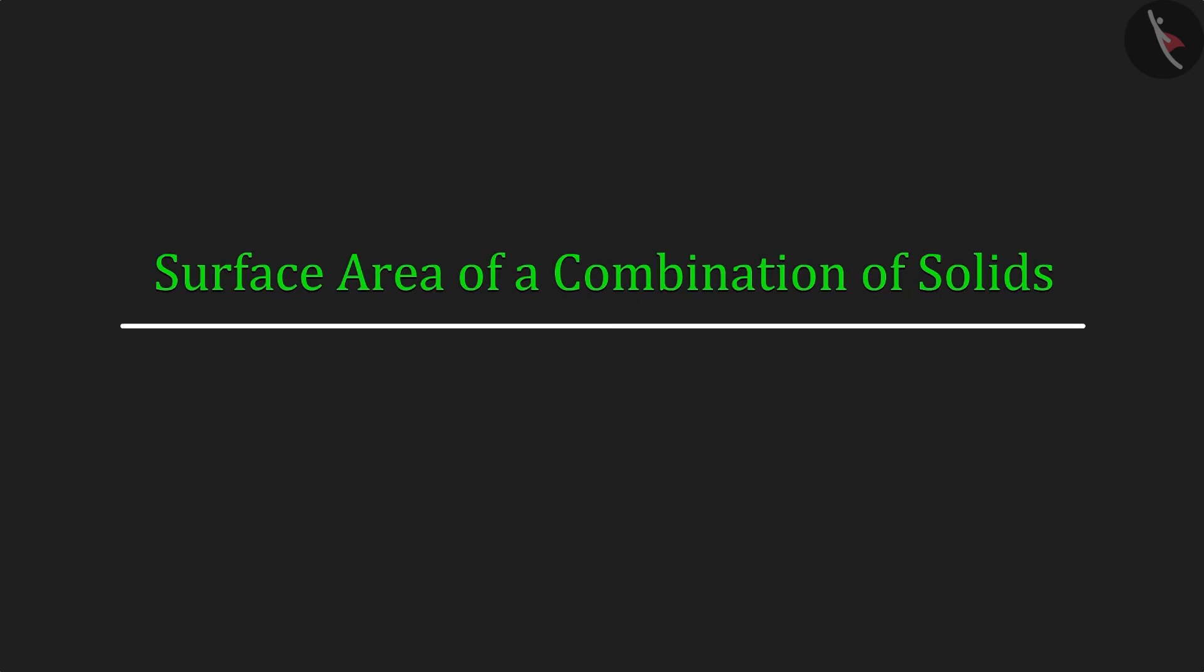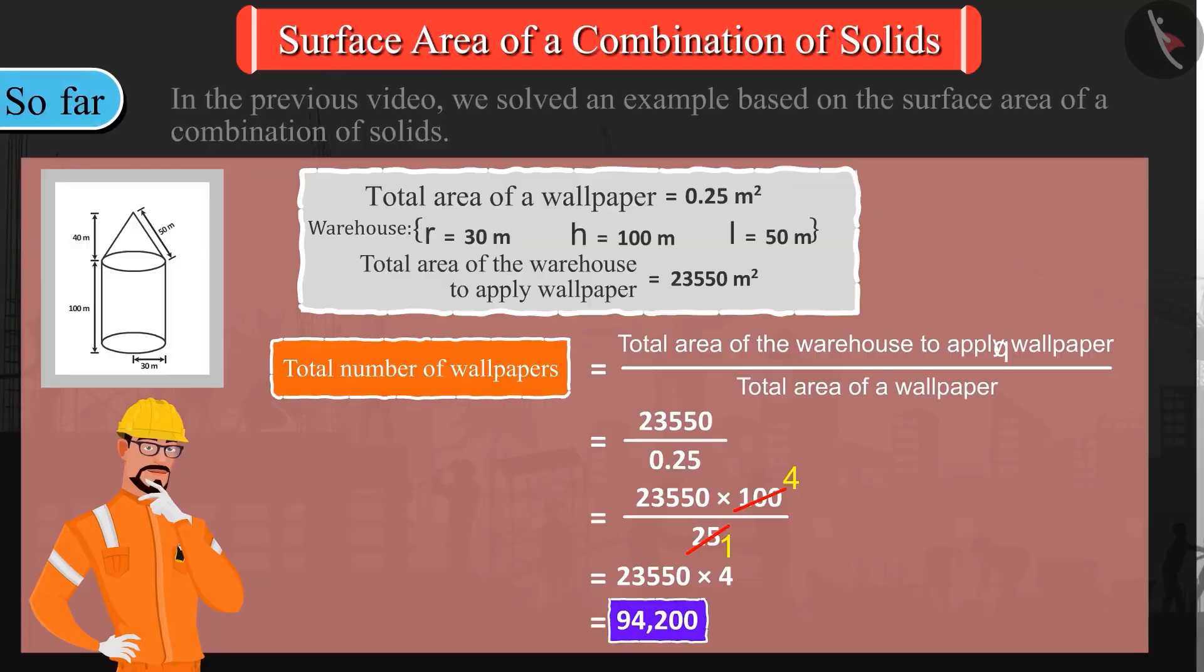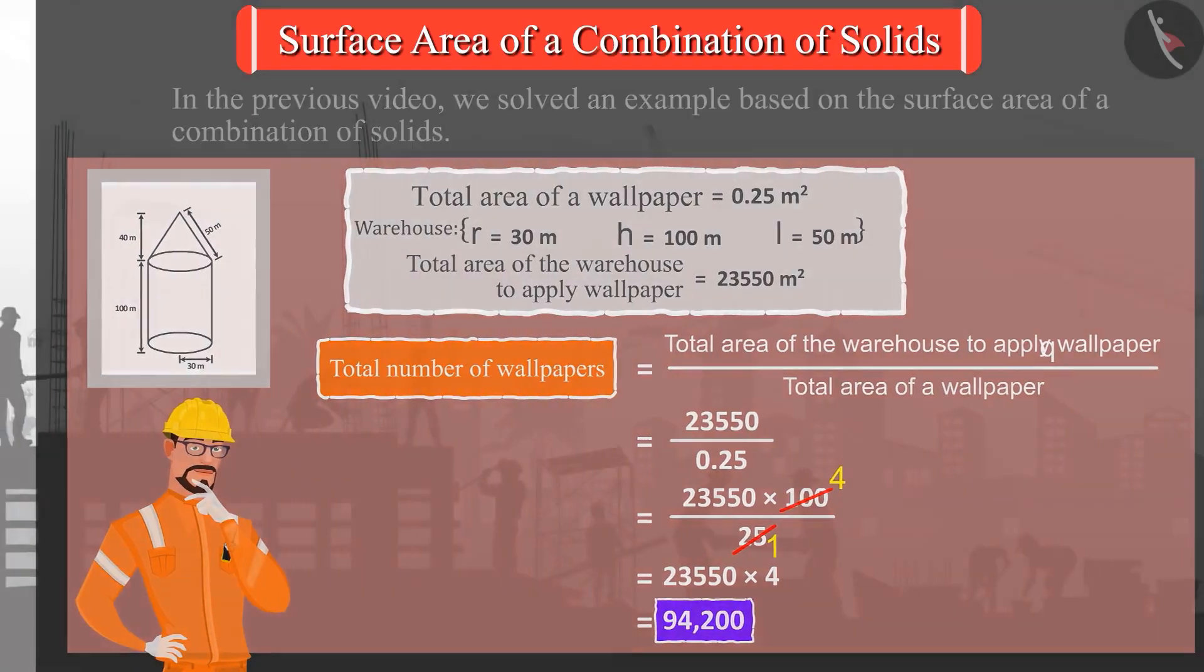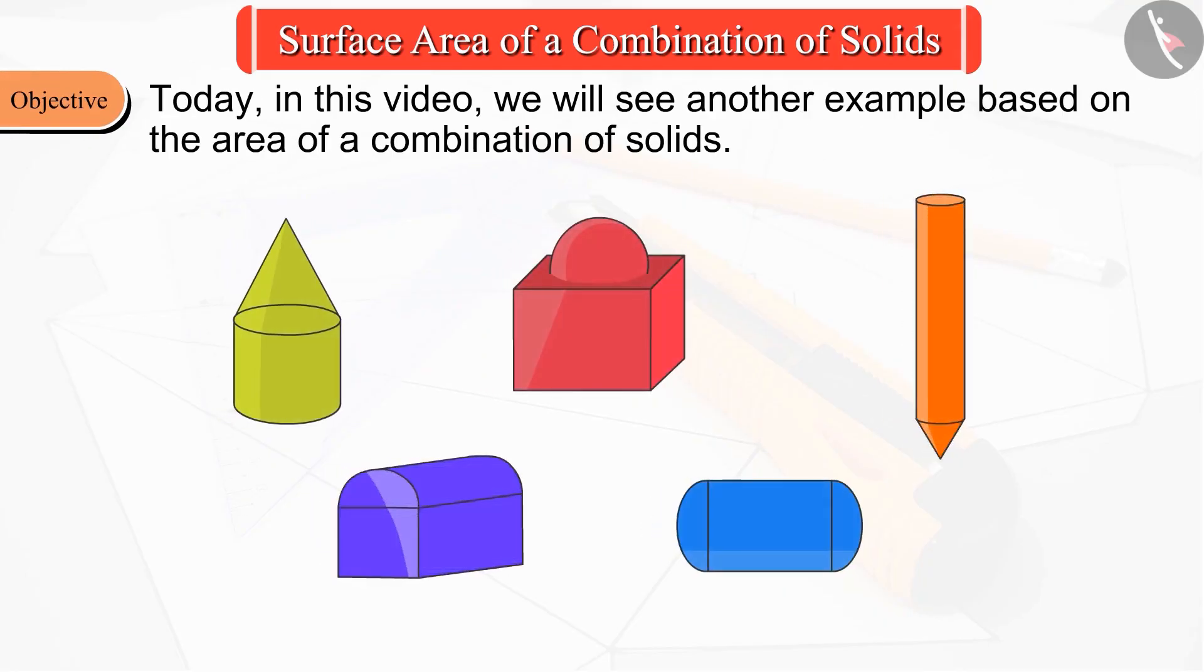Welcome to this video. In the previous video we solved an example based on the surface area of a combination of solids. Today in this video we will see another example based on the area of a combination of solids.